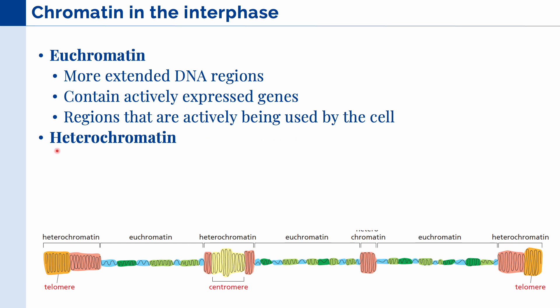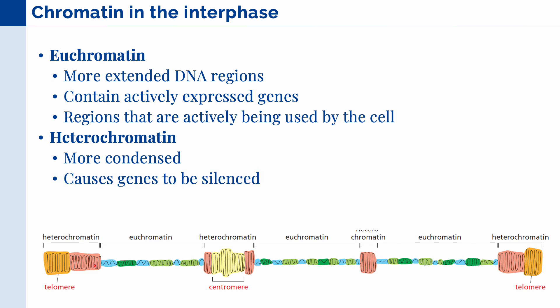These regions are extended because different proteins need to access these bits of DNA because they contain actively expressed genes. In other words, these genes are regions that are being actively used by our cell. Then we have heterochromatin, which are more condensed. And because of this high condensing of DNA, these causes the genes in these areas to be silenced. However, the cell can control these different regions by using the histone modifications that we discussed in the previous slide.